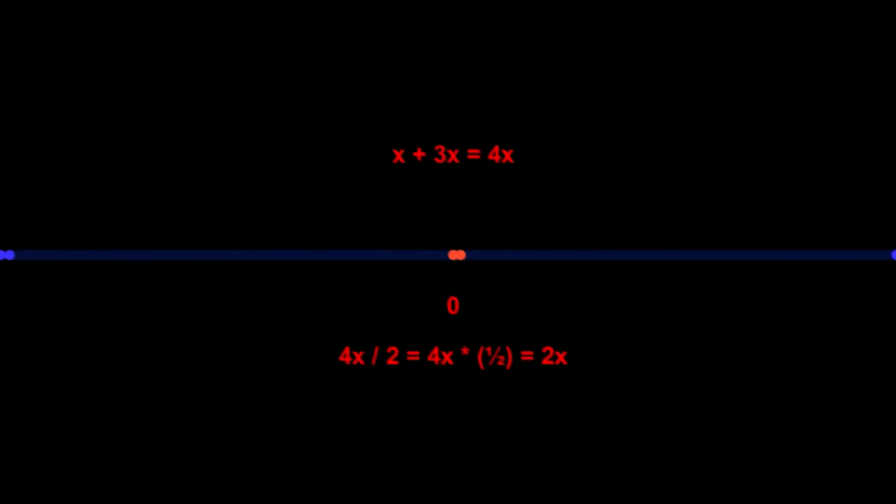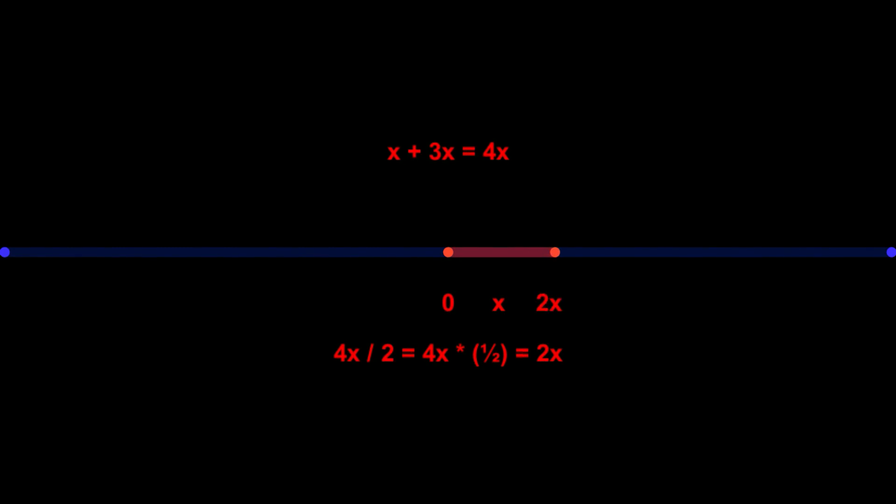And what about multiplication and division? They also influence the length of the line, but the basis unit with which it now is adjusted is the current length of the line, rather than the one unit of addition and subtraction. Let's call the current length x instead of one.